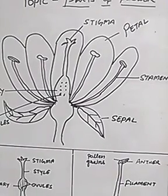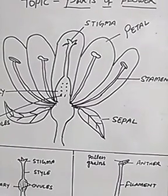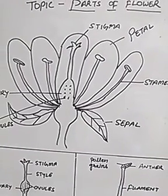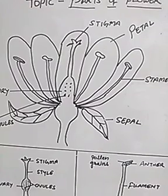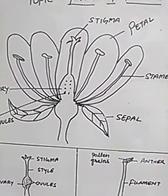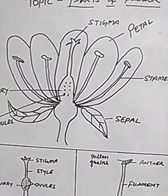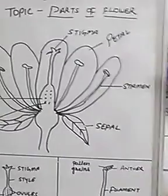These sepals protect the flower when it is still a bud — the flower bud. So they protect the flower. And they support the petals when the flower blooms.